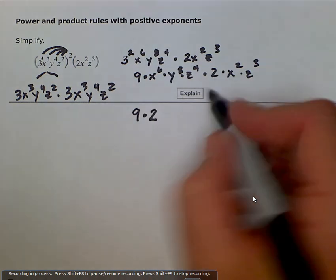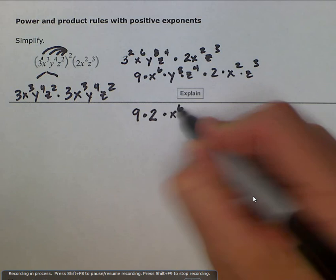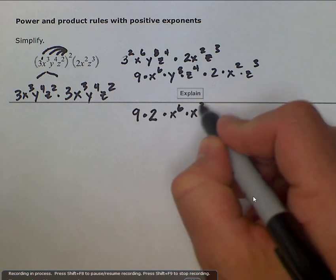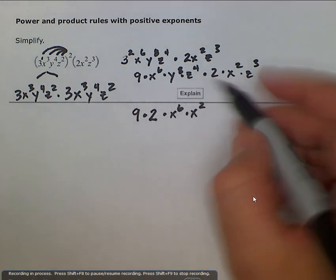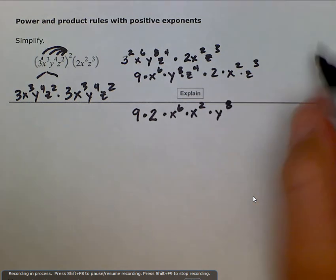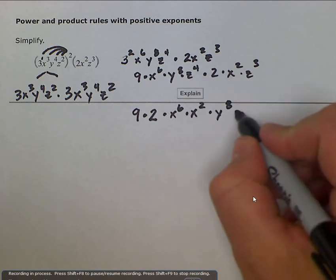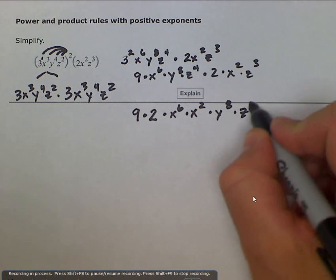Then I'll put my x's together, times x to the sixth times x squared. And then we only have one y, so times y to the eighth. And then z to the fourth and z to the third, times z to the fourth times z to the third.